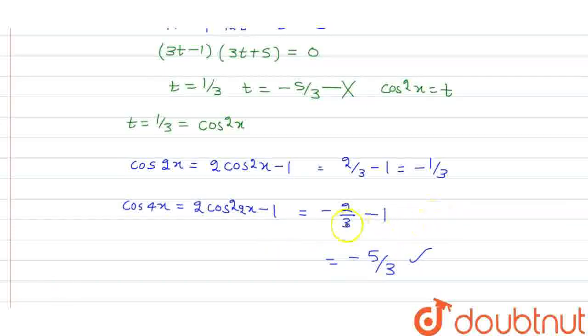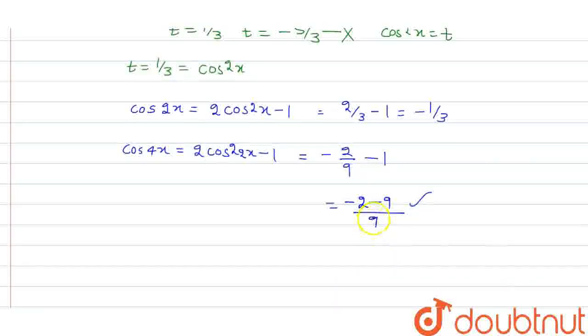Actually, we need to square this thing. This is minus 1 by 3, so this will be square. This is 1 upon 2 upon 9, so this will be minus 2 minus 9 upon 9. If we square, so this will become positive, so this will be minus 7 by 9. Thank you.